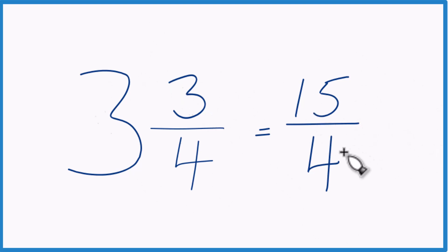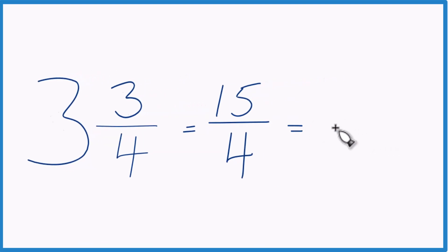We can even check our work here because 4 goes into 15. 4 times 3, that's 12, with 3 left over. Bring the 4 across, 3 and 3 fourths. That's what we had before.